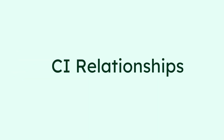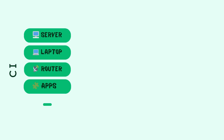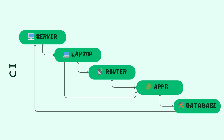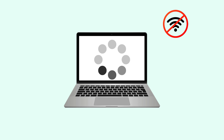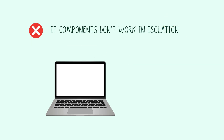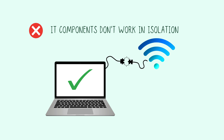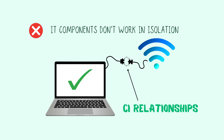Finally, CI Relationships. In most cases, IT components, or CIs, do not deliver much value until they get connected with each other. Remember the pain when you have a computer and it's not yet connected to the internet? IT components don't work in isolation — they depend on each other to deliver value. A CMDB maps out how they are connected, and the connections between those IT components are the so-called CI Relationships.